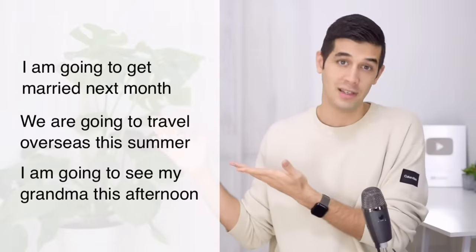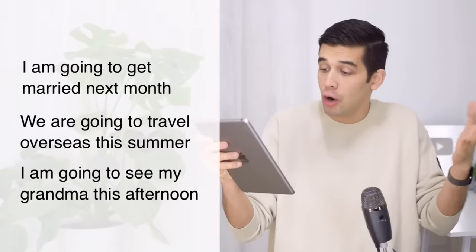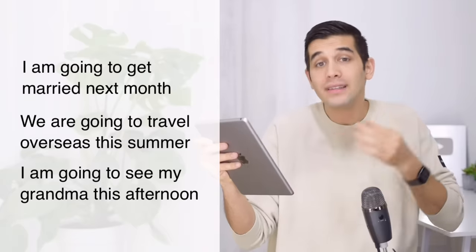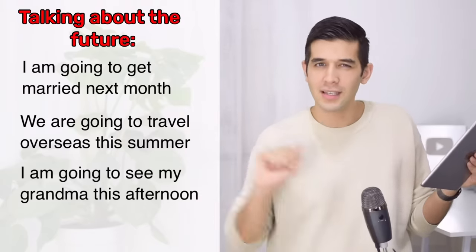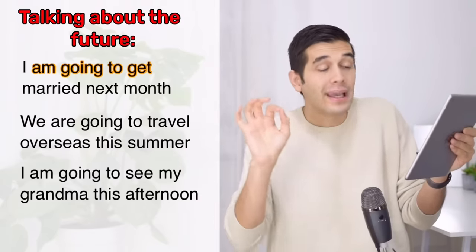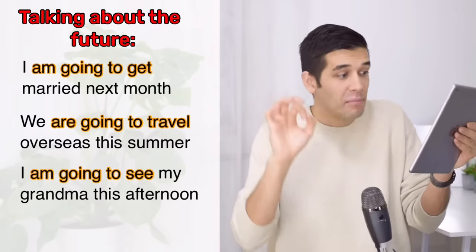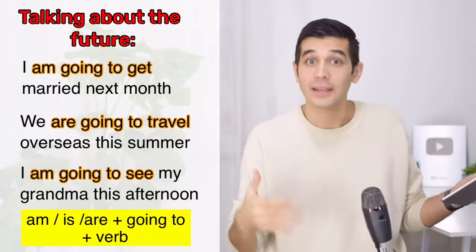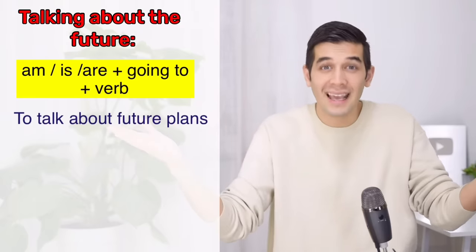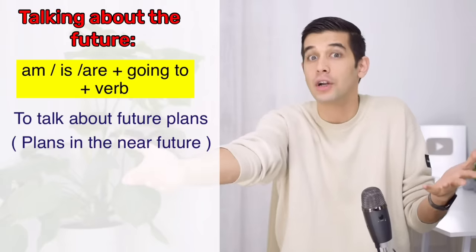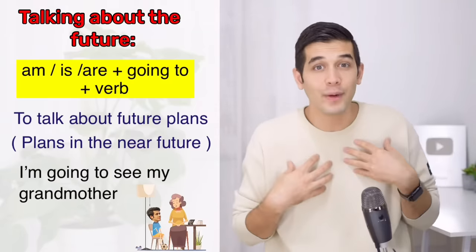Now let's get to lesson number two. Look at these examples: I am going to get married next month; we are going to travel overseas this summer; I am going to see my grandma this afternoon. These sentences also talk about the future. But look at the tense: I am going to get, we are going to travel, I am going to see — that's am/is/are plus going to plus verb. We use this tense to talk about future plans. If you are talking about your plans in the near future, you can use be going to.